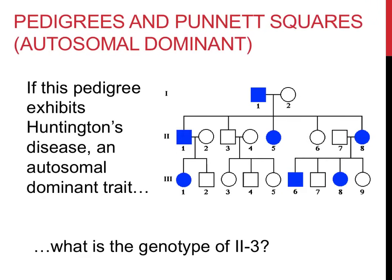It's time to run through some examples involving Punnett squares and pedigrees. The first example question asks: if this pedigree exhibits Huntington's disease, an autosomal dominant trait, what is the genotype of Roman numeral 2-3? Step one: identify who you're talking about. Highlighted now is Roman numeral 2-3. This is an autosomal dominant trait and he doesn't have it. That leaves only one possibility: he's homozygous recessive — lowercase g, lowercase g.